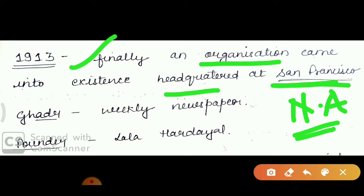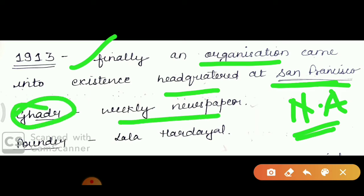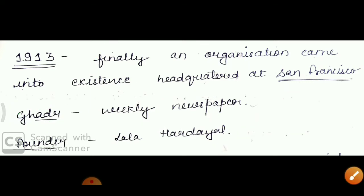Where did the name GADR come from? It was a famous weekly newspaper, published in different languages like Gurmukhi, Hindi, and Urdu. They took the name GADR from this newspaper. The founder of this party was Lala Hardayal. This is how the party was formed.